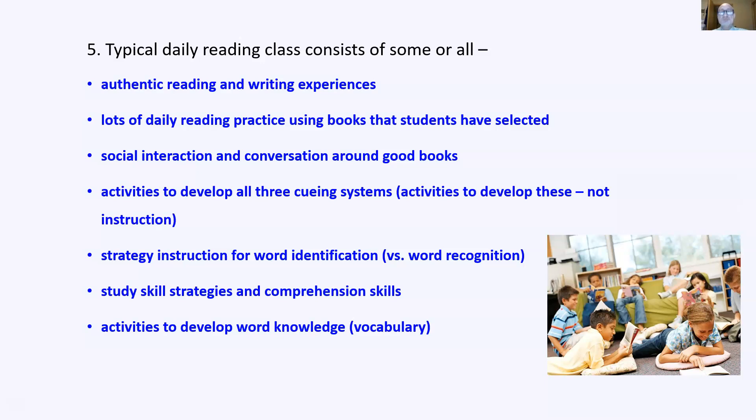Here, they're activities to develop the neural pathways used to recognize words. That's different than word identification. You have specific strategy instruction for word identification. If you don't recognize a word, here are the steps that you take. As well, you have specific direct instruction for study skills, strategies, and comprehension skills. This is what you do to comprehend a textbook, as well as activities to develop word knowledge or vocabulary.